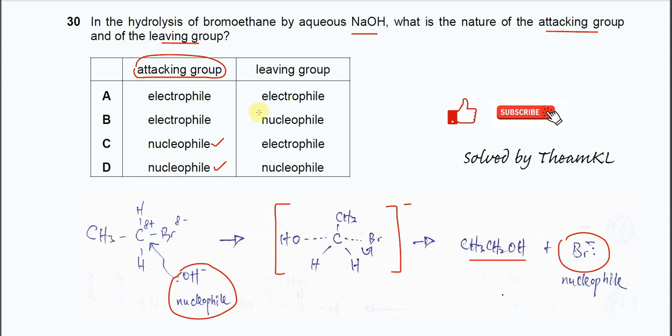The one that's leaving is the bromide. The bromide has a few lone pairs with itself. Because this bromide is an electron rich species, this is not electrophile. This is nucleophile as well.